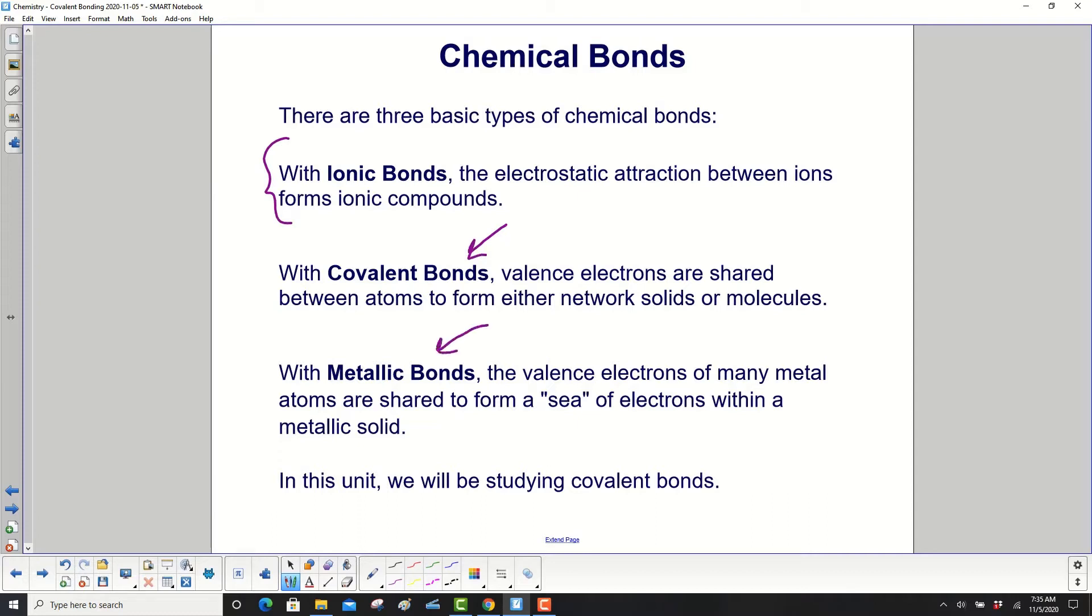And then finally metallic bonds. The valence electrons of many metal atoms are shared to form a sea of electrons within a metallic solid. This unit will be studying covalent bonds.